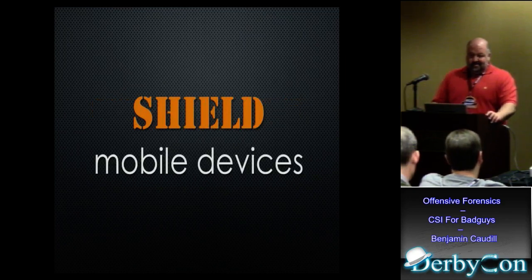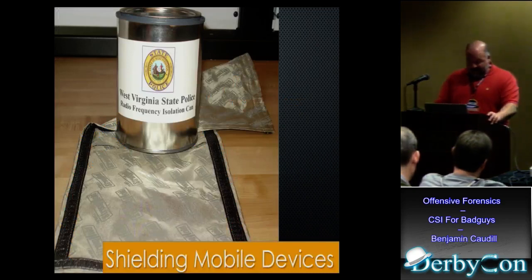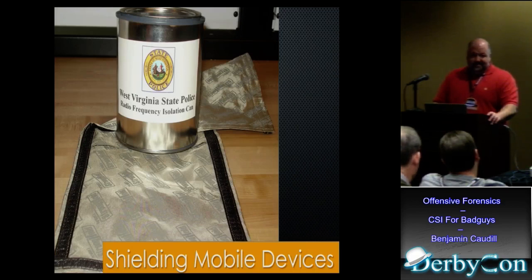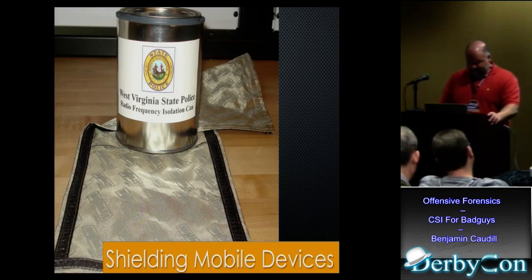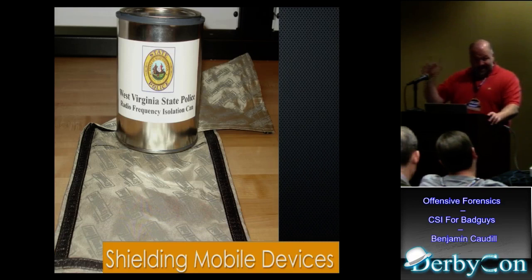Mobile devices are a big problem. You've got to shield those things. Two ways shown here: the bottom is a Faraday bag, and the top is a paint can — the field expedient paint can. You can also wrap it in as much aluminum foil as you can find and hope for the best. You want to shield it because they can be wiped remotely. Also, if it's constantly receiving data from the tower, the data on the device is changing — so we want to stop that from happening.